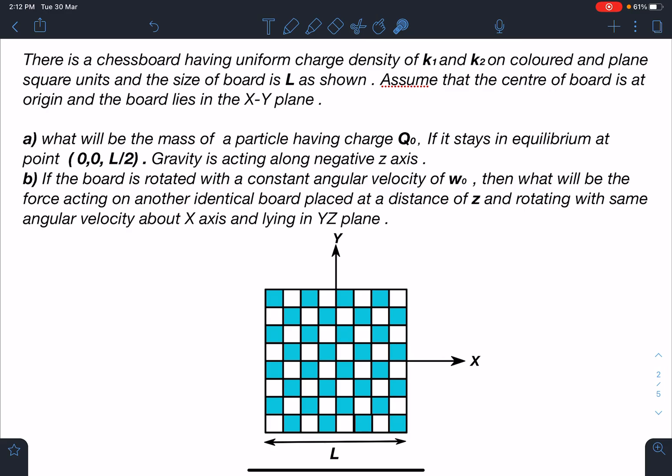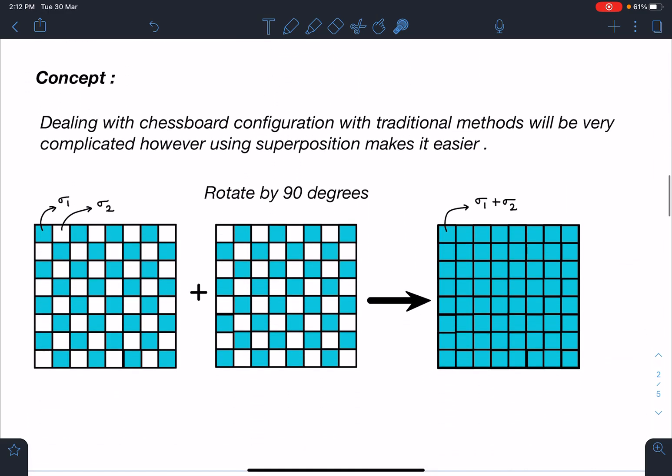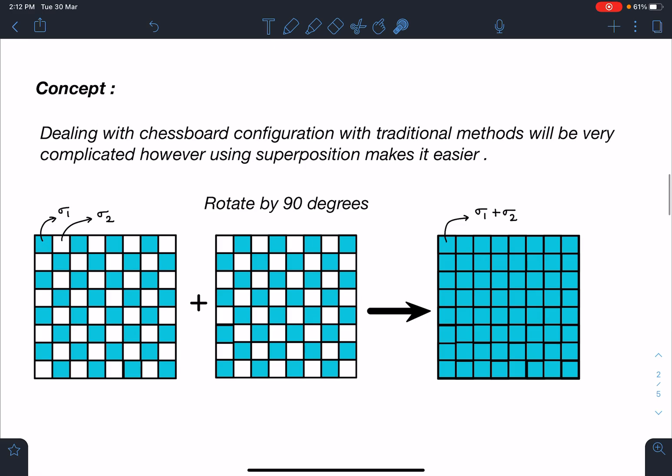And the second part is: if the board is rotated with a constant angular velocity of ω₀, then what will be the force acting on another identical board placed at a distance of z and rotating with the same angular velocity about X axis and lying in YZ plane? So this is the question, let's discuss this problem.